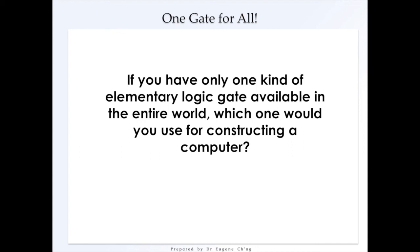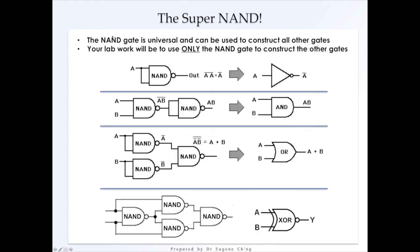And even the entire processor can be created using that particular gate alone. To identify one kind of gate which has the smallest number of transistors, but also the kind of gate that can implement all other gates. And this will be the NAND gate. It is a super NAND. The NAND gate is universal. It can be used to construct all other gates. And in my lecture, I asked the students in their lab work to use only the NAND gate to construct the other gates.